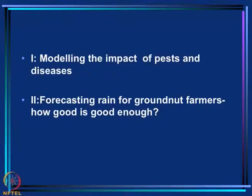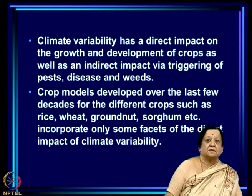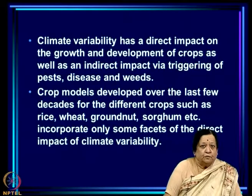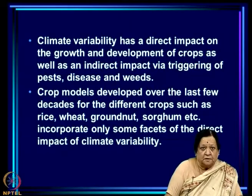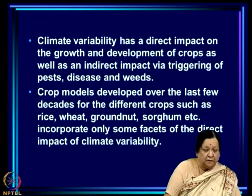Today I am going to continue talking about monsoon variability and agriculture. As pointed out, climate variability has a direct impact on the growth and development of crops, which we have looked at already, as well as an indirect impact via triggering of pest diseases and weeds. Crop models developed over the last few decades for different crops such as rice, wheat, groundnuts, and sorghum incorporate only some facets of the direct impact of climate variability.